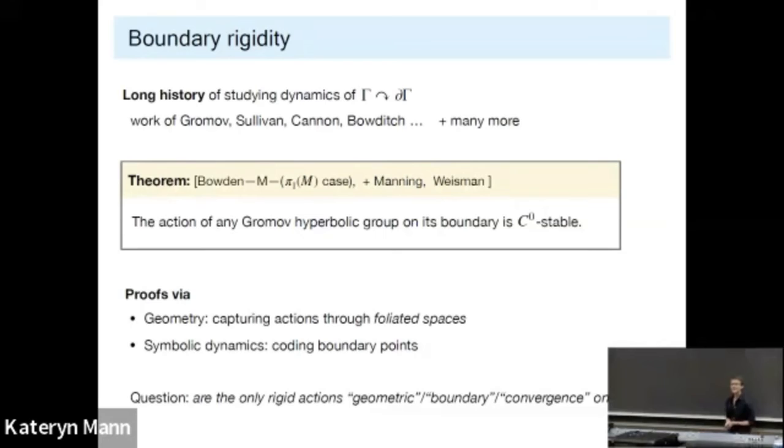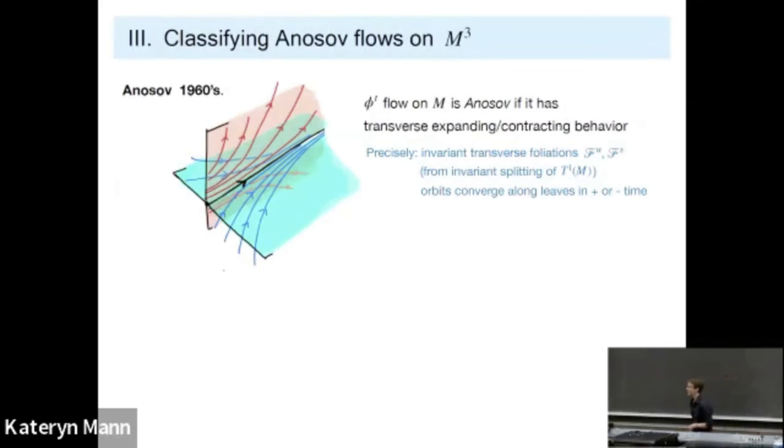But what I would really like to see, and here's the vaguest of vague open questions, can you do some kind of converse-ish result in the spirit of my work with Maxime Wolff? In any sense are the only rigid or strongly rigid actions of hyperbolic groups on boundary-like spaces exactly, or up to something, these boundary ones. See how much I'm hedging here because I don't know exactly what the conjecture, but something in there should be true.